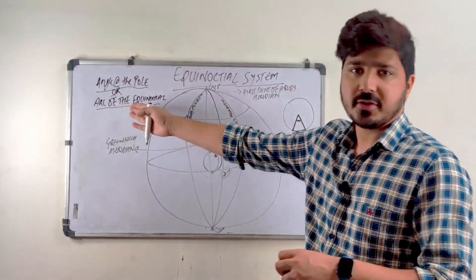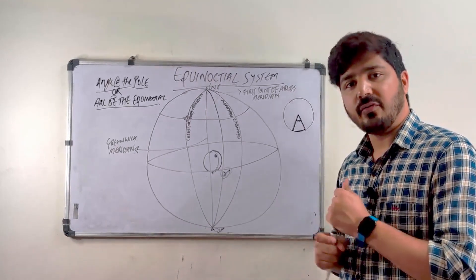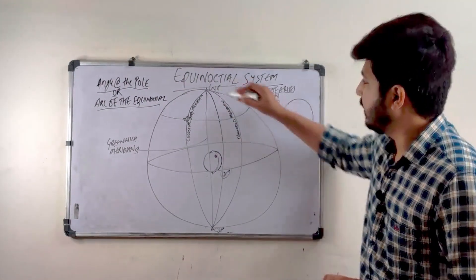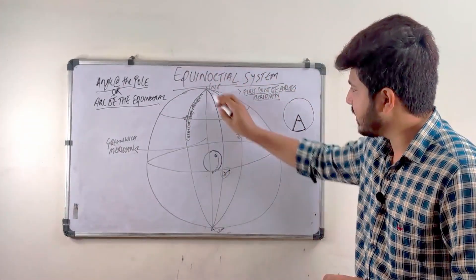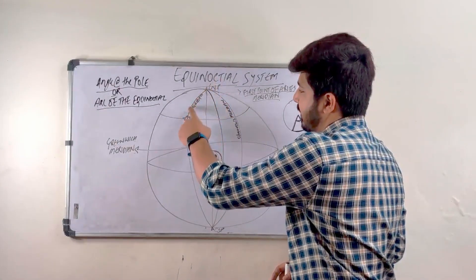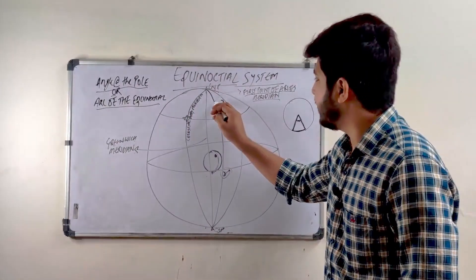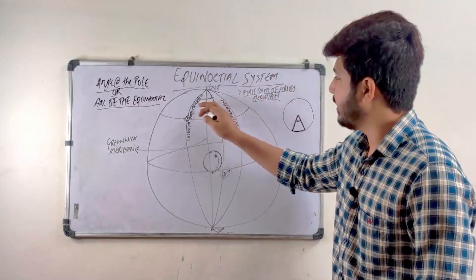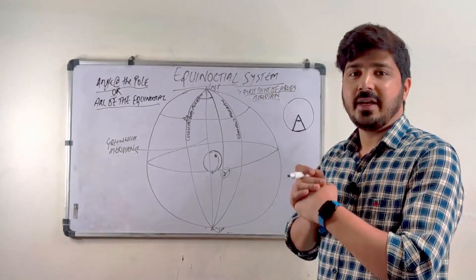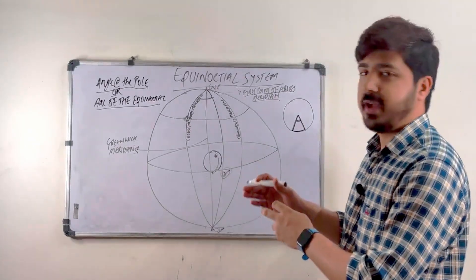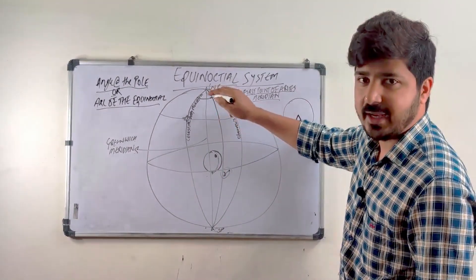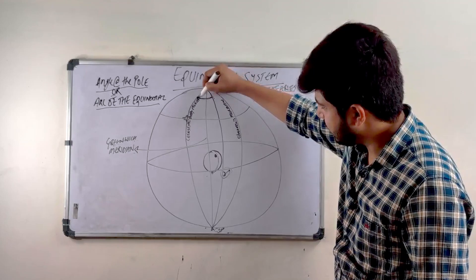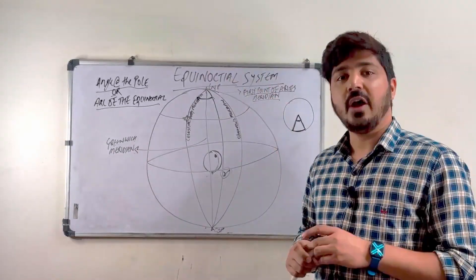In SHA it is the angle at the pole or arc of the equinoctial between the celestial meridian passing through the First Point of Aries — this meridian here — and the celestial meridian passing through the body. So it is the angle between this meridian and this meridian — between the First Point of Aries and the celestial meridian of the body. Additionally, it is measured westwardly from the First Point of Aries, in this direction.